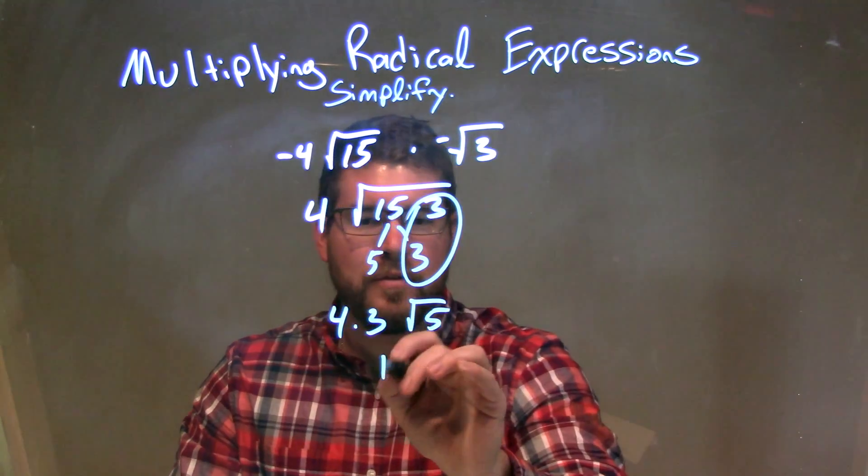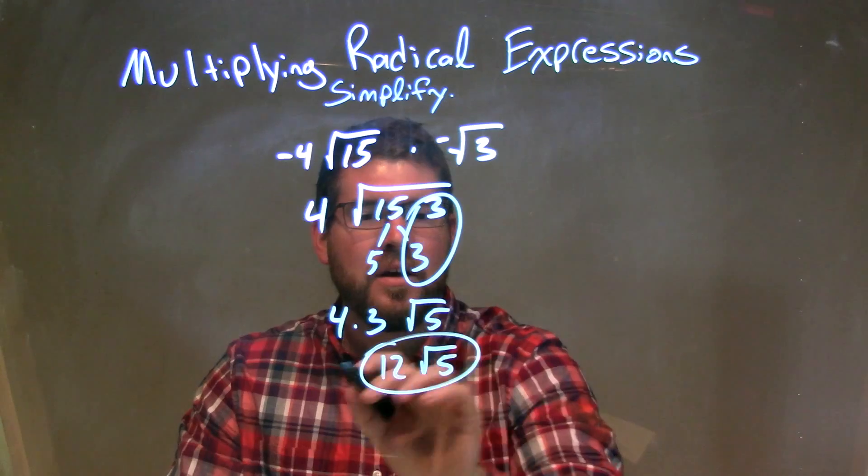4 times 3 is 12, so we have 12 here times the square root of 5, and that is our final answer.